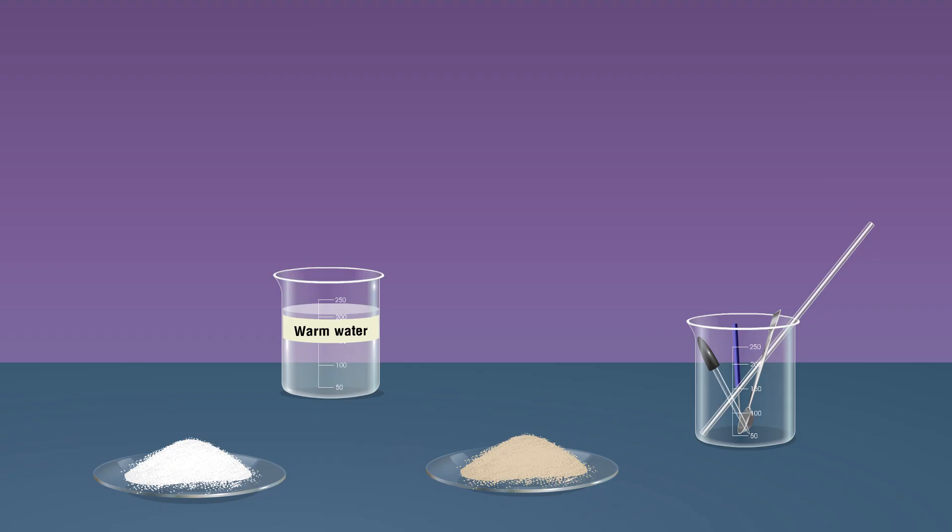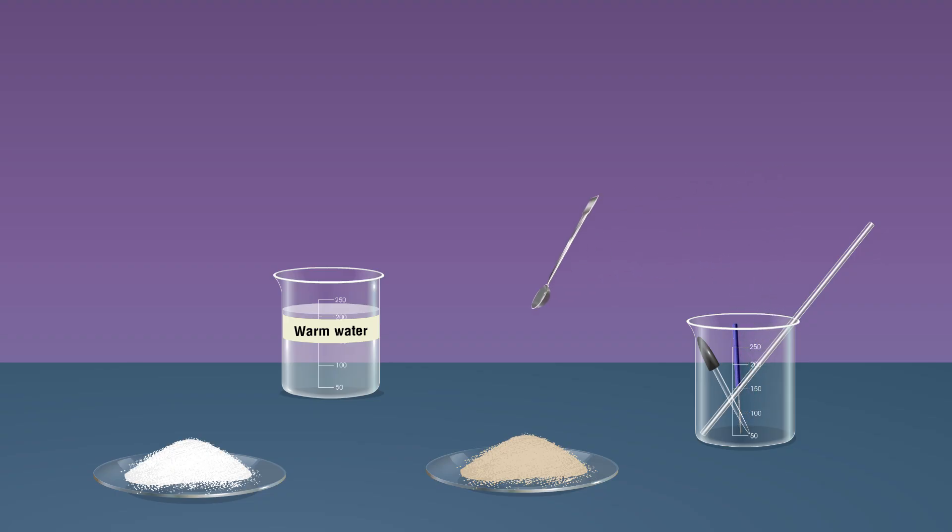Procedure: In the beaker with warm water, add a spoonful of sugar using a spatula. Add 1 gram of dehydrated yeast powder to the same beaker.